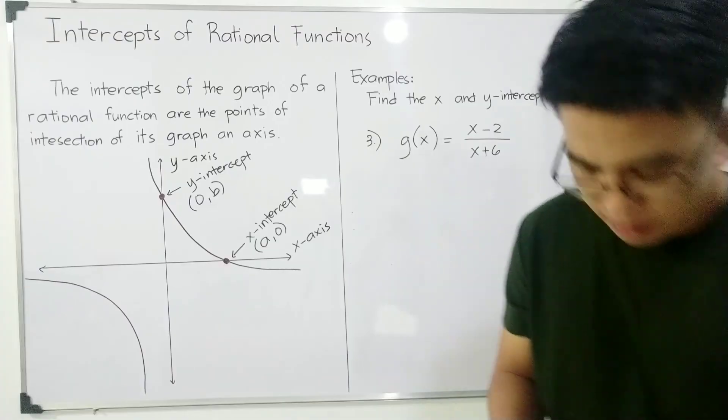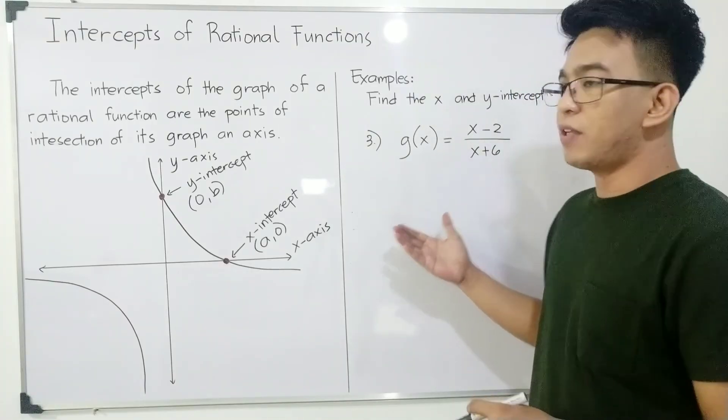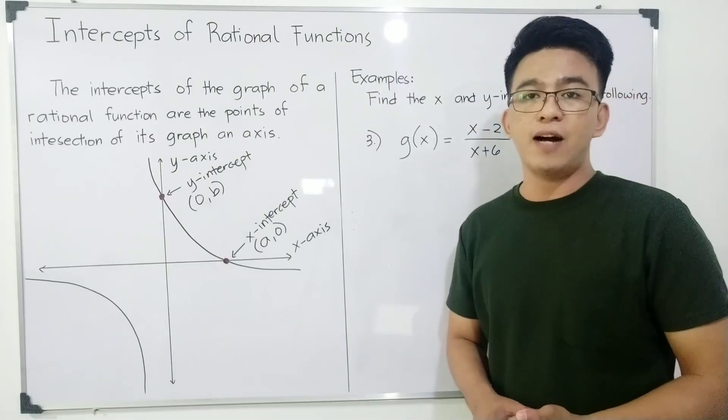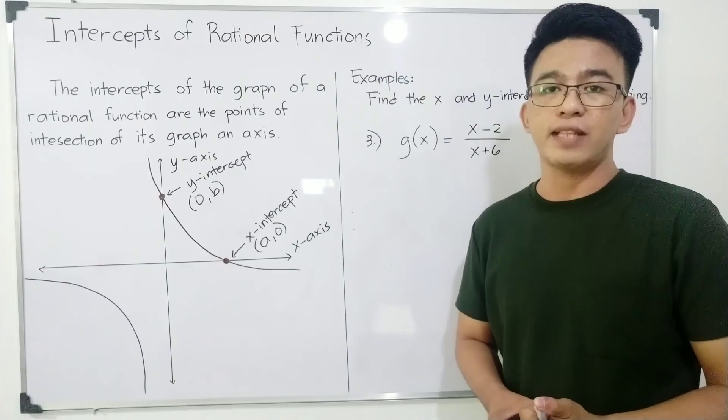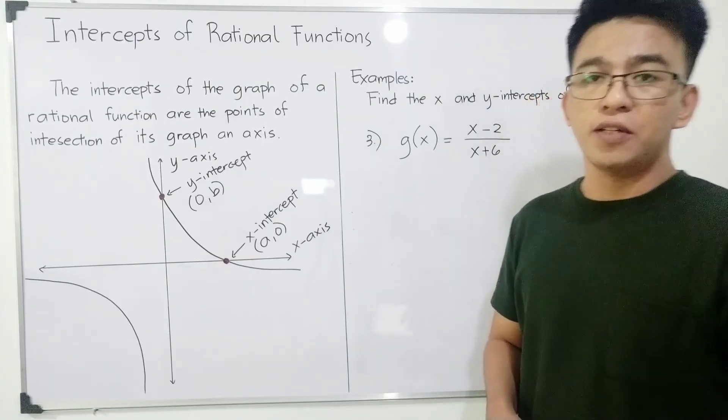I hope you understand this. This is our example number 3, extra activity, so we can see if you learned the process or the way on how to find the x and y-intercept of a given rational function.